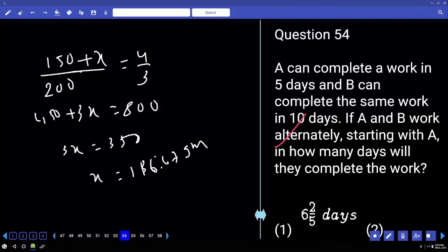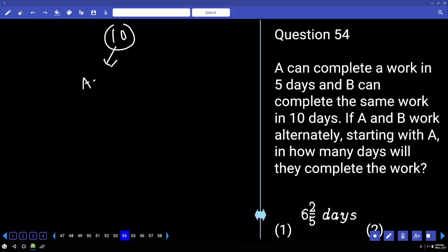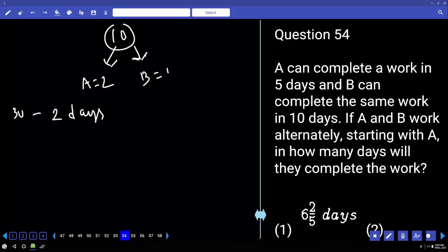54. A can complete a work in 5 days and B can complete the same work in 10 days. If A and B work alternatively, starting with A, in how many days will they complete the work? Right. What is the LCM of 5 and 10? 10. What is the capacity of A? 2 units. And what about the capacity of B? 1 unit. But they are working on alternate days. A is starting the work. So, in 2 days, they can complete 3 units. Am I right?